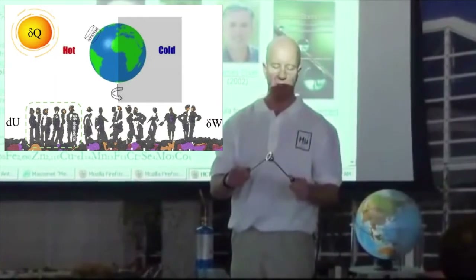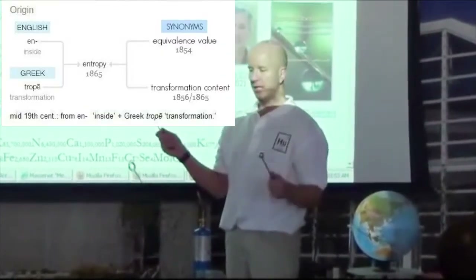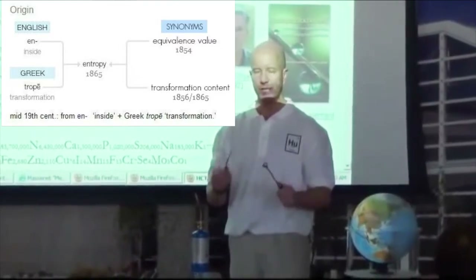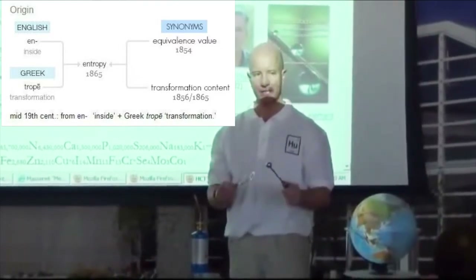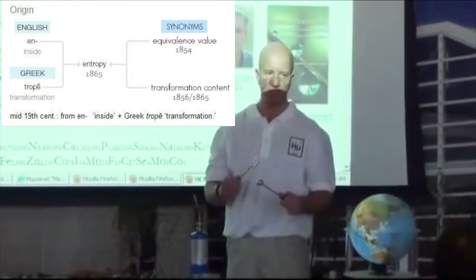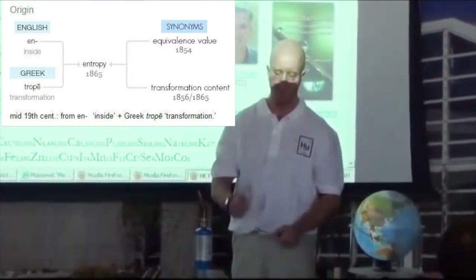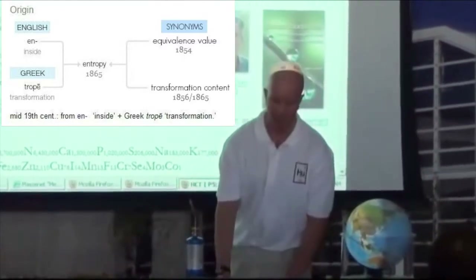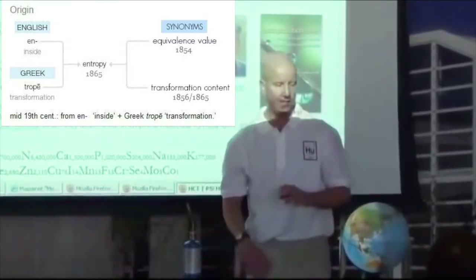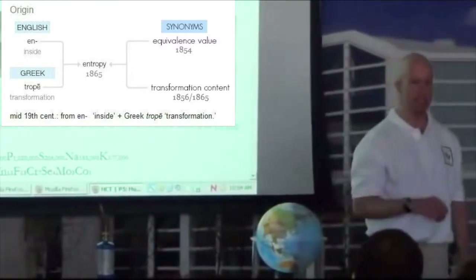Now instead of thinking about entropy as a messy room, what you want to understand is that the difference in entropy increase is called transformation content. And it's based on what's called the Euler-Russ-Positive relationship, which you can look up online. I go back to Leonard Euler, the most prolific mathematician, and that's where you might get your own understanding of systems.